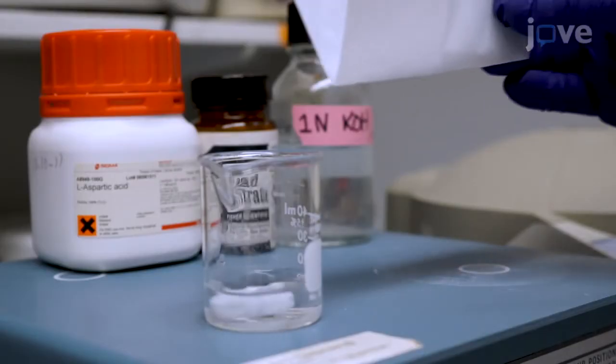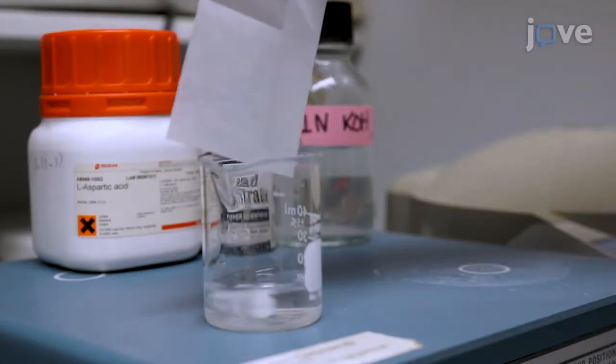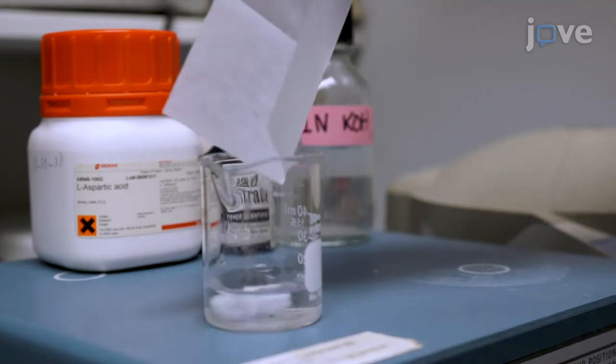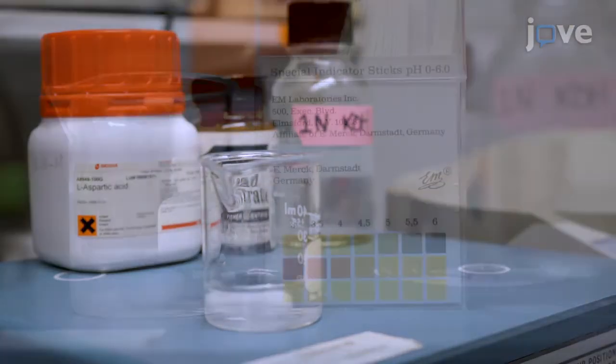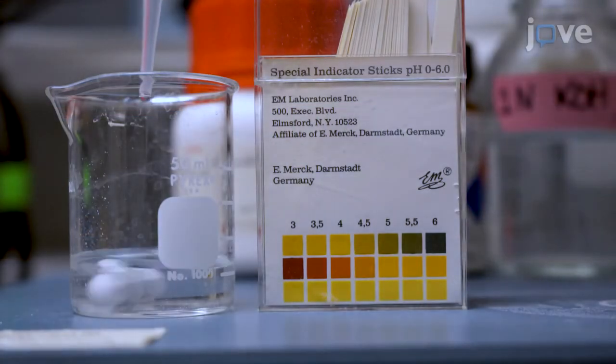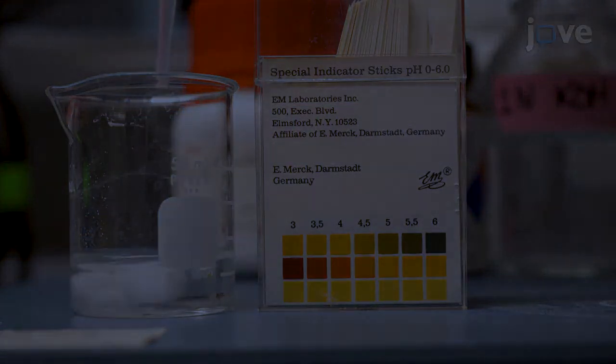The next morning, dissolve 0.066 grams of lead nitrate in 10 milliliters of 0.03 molar aspartic acid solution, and use 1 normal potassium hydroxide to adjust the pH of the Walton's lead solution.